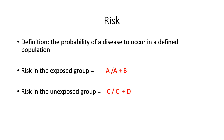We can calculate the risk of developing an illness in the exposed and unexposed group. An example of an exposed group are individuals who smoke cigarettes, while an example of an unexposed group are individuals who do not smoke cigarettes. To calculate the risk in the unexposed, it is illustrated by the equation C divided by C plus D.